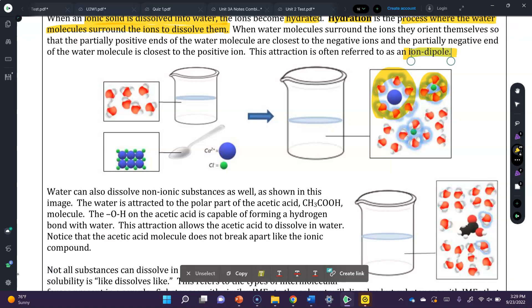Water can also dissolve non-ionic substances as well, as shown in this image. The water is attracted to the polar part of the acetic acid molecule, CH3COOH. The OH on the acetic acid is capable of forming a hydrogen bond with water. This attraction allows the acetic acid to dissolve into water. Notice that the acetic acid molecule does not break apart like the ionic compound. The hydration shell forms around the polar component, so the C double bond O and then the hydrogen bonding on its OH group, but it doesn't necessarily form a hydration shell around the non-polar part of acetic acid.